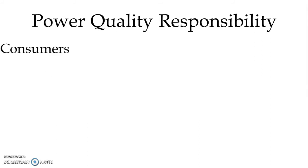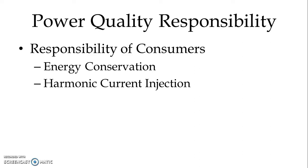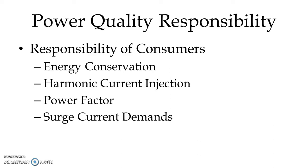Then we have power quality responsibility from the consumer end. Energy conservation is one very important concept and consumers must learn to optimize energy. Then harmonic current injection — because of load conditions we now have a number of electronic loads, and because of this, harmonics are generated and injected into the power lines. Up to a certain limit, harmonic current injection is allowed, but beyond that it must be restricted. Power factor is again one very important factor which can be controlled from the consumer end, as well as surge current demands. If power suppliers and users each do their part, power quality is improved and power consumption is optimized.